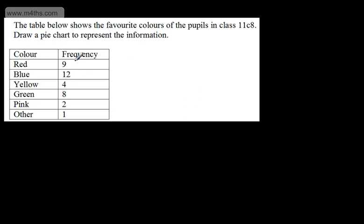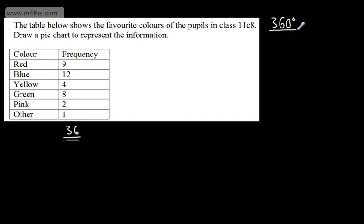We're going to start off by drawing a pie chart, then move on to some questions on interpreting pie charts. The table below shows the favourite colours of the pupils in class 11C8, and we're asked to draw a pie chart to represent the information. A pie chart is a circle. Adding up the frequencies: 9 and 12 give 21, then 25, 33, 35, 36. Since angles in a circle sum to 360 degrees, we divide 360 by 36 students, which tells us each student needs 10 degrees.